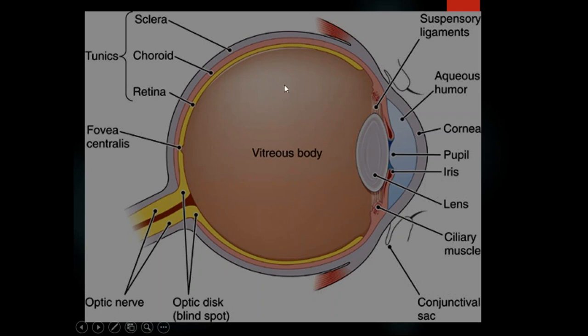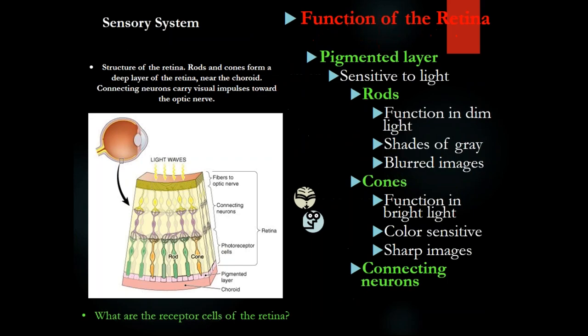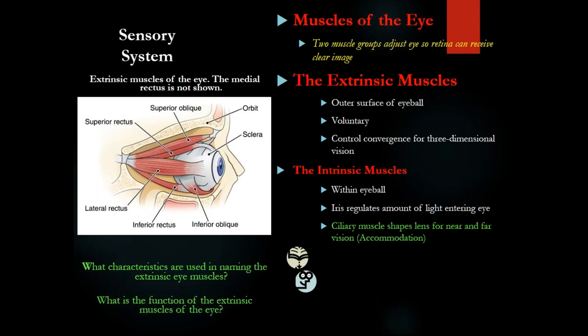The vitreous body is the third chamber. The first is the anterior chamber, the second is the posterior chamber. The cornea is a transparent continuation of the sclera. Rods are for night vision; cones are for bright light, colors, and crisp vision. Cranial nerve number two — the optic nerve — provides vision, not eye movement. Movement is controlled by cranial nerves three (oculomotor), four (trochlear), and six (abducens).